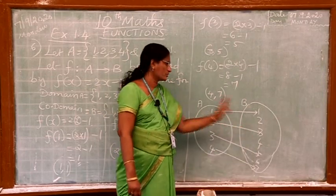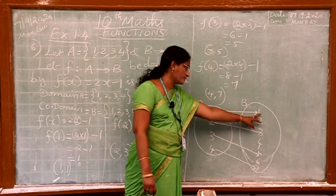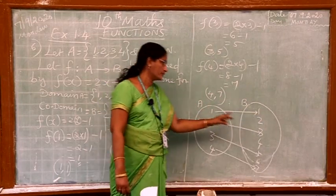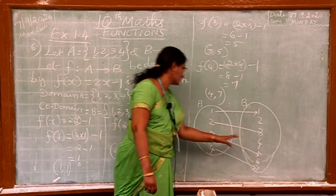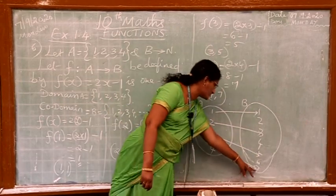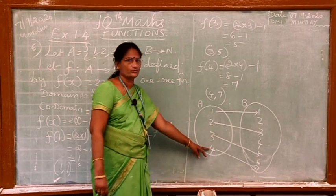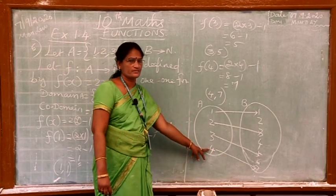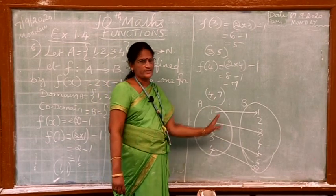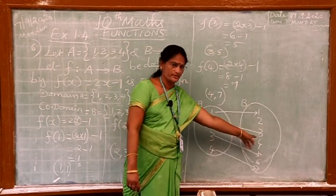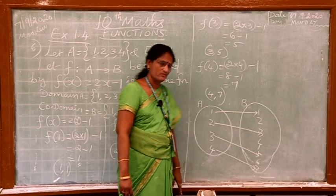If you put 1, you have to know pre-image of 1 is 1, pre-image of 3 is 2, pre-image of 5 is 3, pre-image of 7 is 4. Do you understand this? Each and every element in A has an image in B. Therefore, this is one-one function.